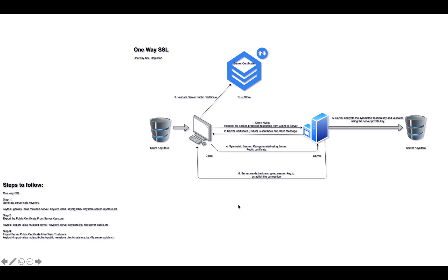It comprises certain entities like client, server, a client trust store, a client key store, and the server key store. Key stores are used to store private and protected keys — it could be a private key or private certificate. Trust stores are used for public credentials like public certificates and public keys. Public keys are used for encryption and are decrypted using private keys.